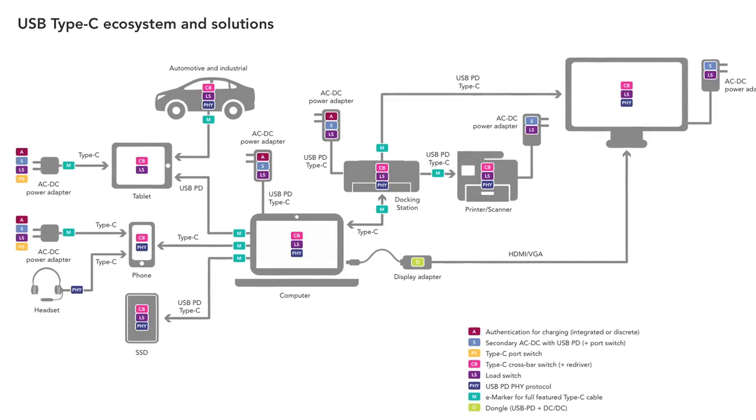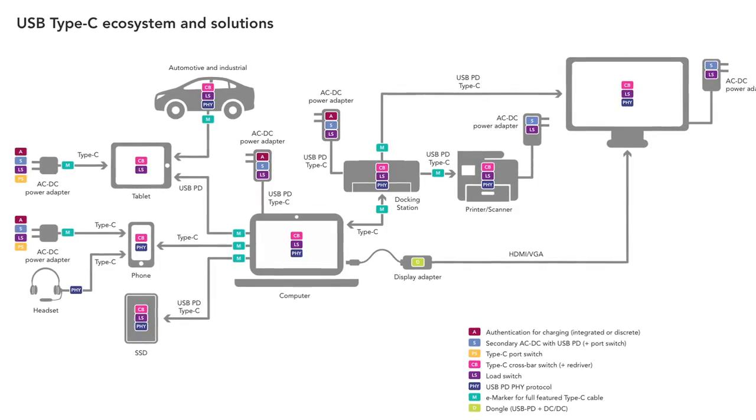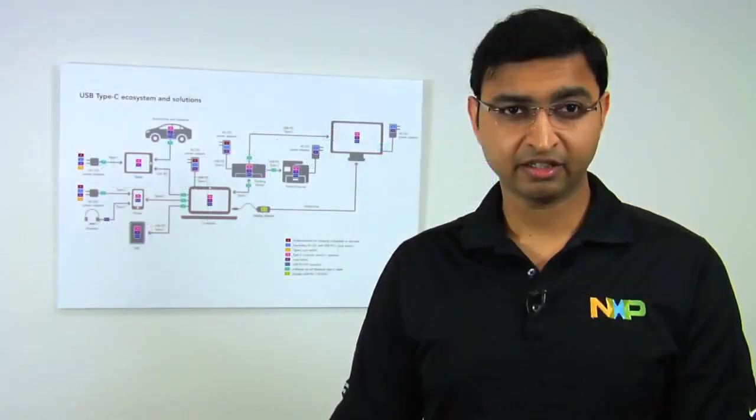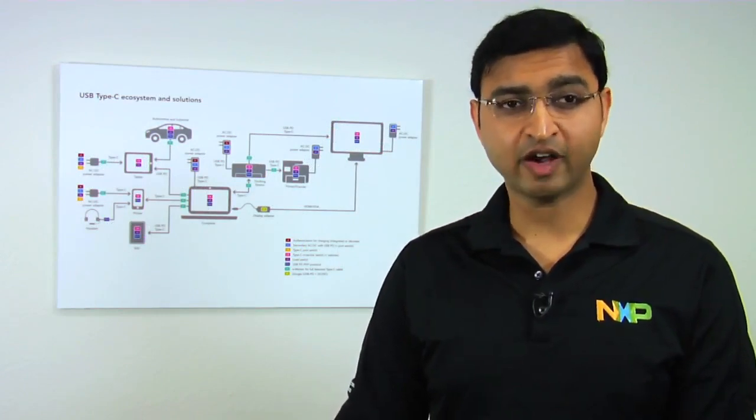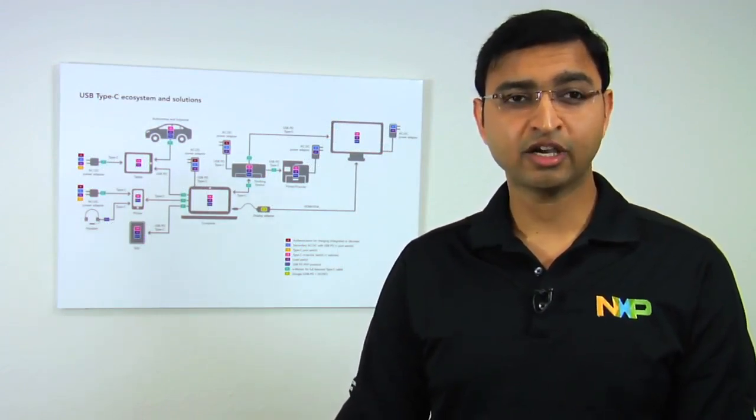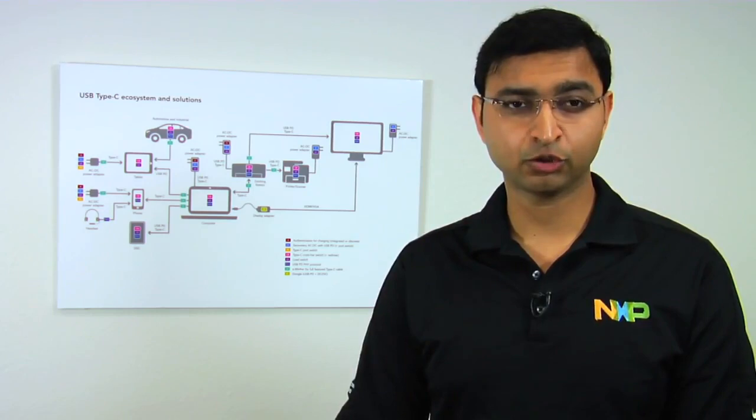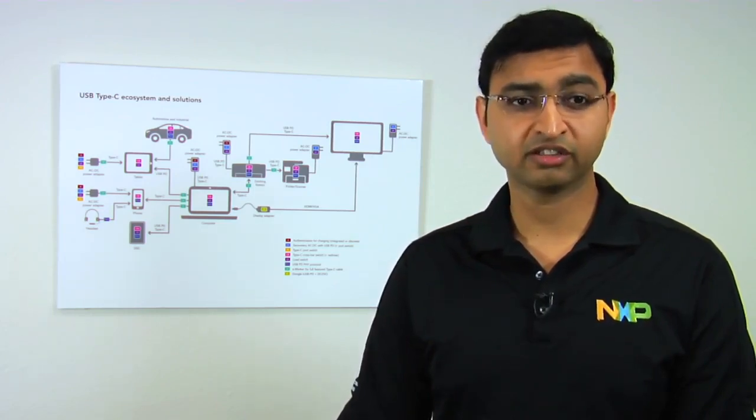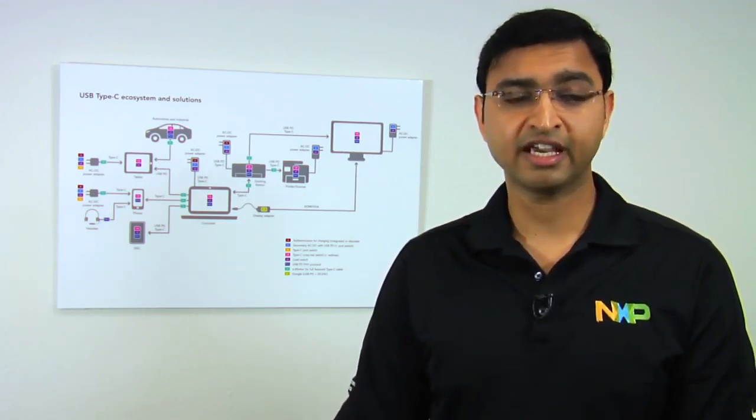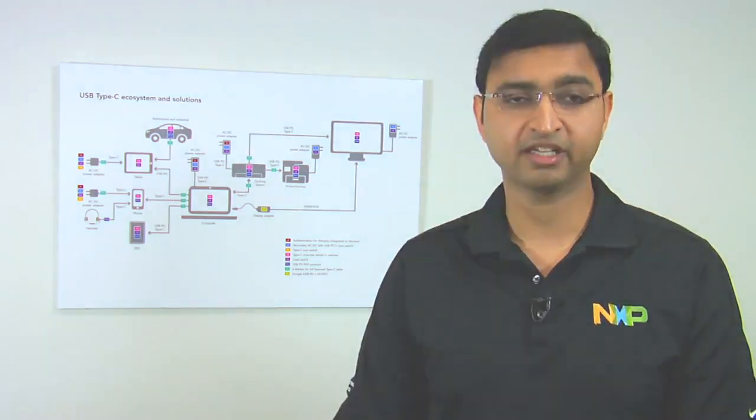USB Type-C can support up to 100 watts. So USB Type-C and power delivery can support up to 100 watts scalable charging, with the help of 20 volts at 5 amps. Hence, you need extra port protection to be able to protect your device. This is where load switches and authentication solutions can come in.